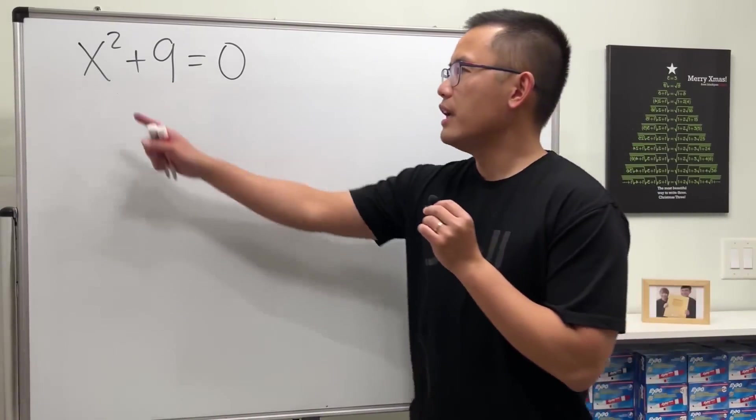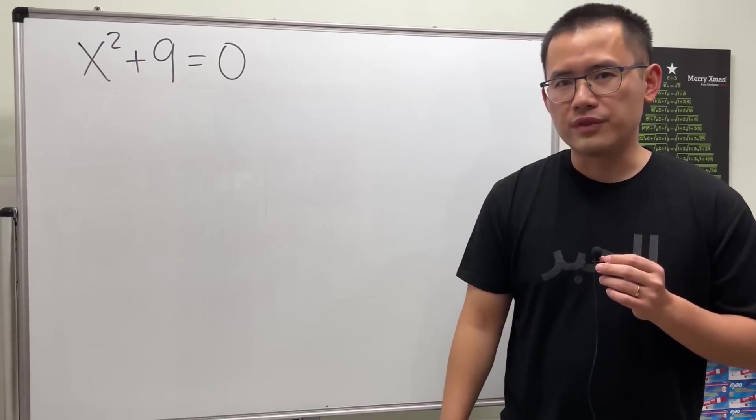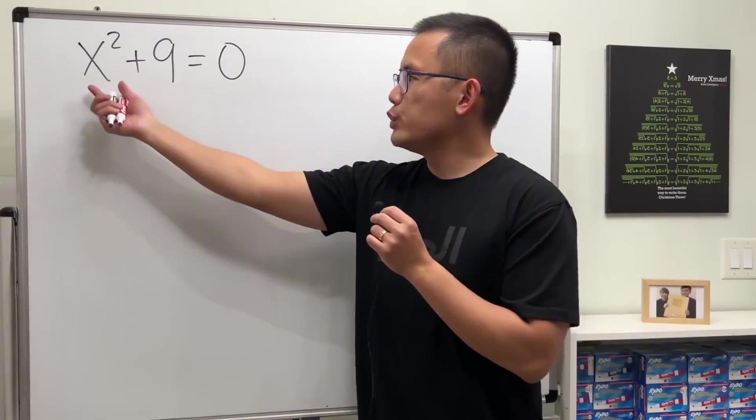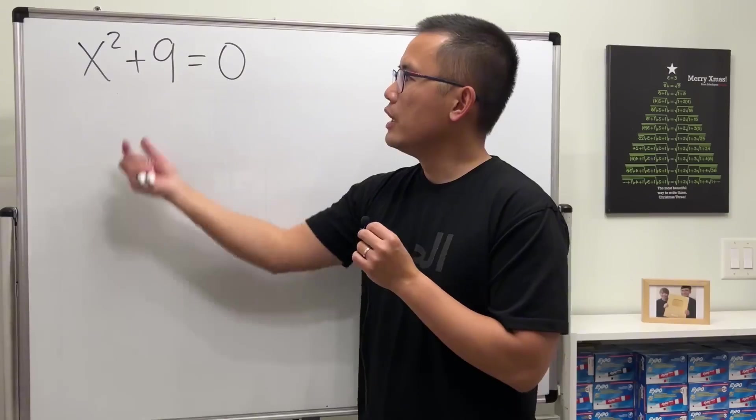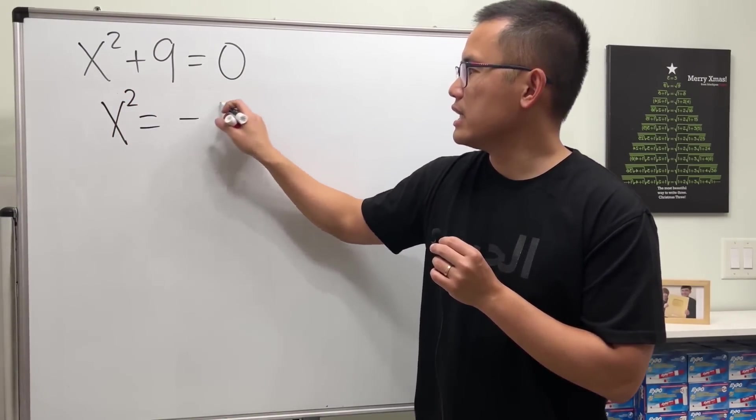Let's talk about how we can solve the equation x squared plus 9 is equal to 0, and I'll show you guys two approaches for this. First, because we just have the x squared term right here, we can move the 9 to the other side, and we get x squared equals negative 9.